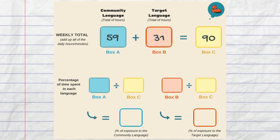To calculate the percentage of exposure to the community language, take the number in box A and divide it by the number in box C.